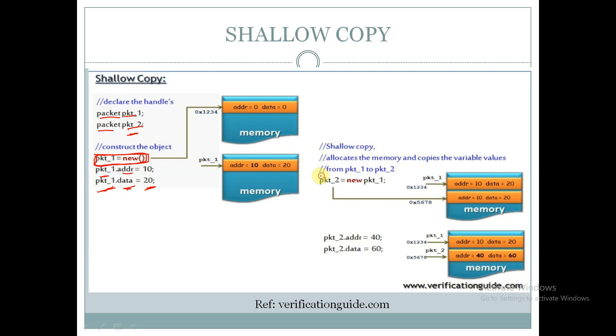Now here we are doing Shallow Copy. The syntax for Shallow Copy is pkt2 equal to new followed by the handle which we want to copy from. In normal object assignment we don't use this new keyword, but in Shallow Copy we will use this keyword new.